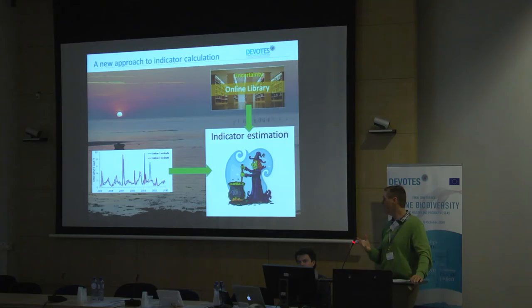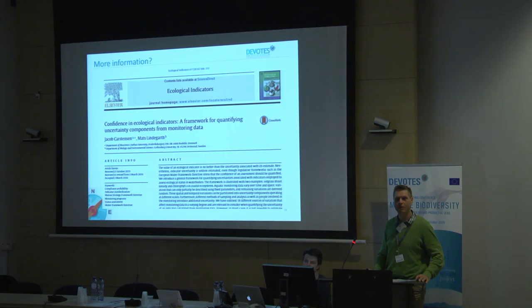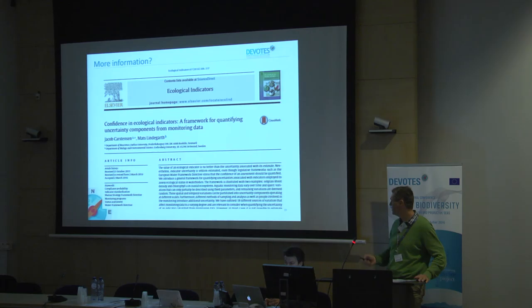To calculate the uncertainty standard error of an indicator, we combine the data specific to each individual system with some fixed parameters from the library. Putting those together allows us to produce an estimate of the standard error of an indicator. This is not witchcraft — it is based on sound scientific principles, described in a publication that came out this year in Ecological Indicators.